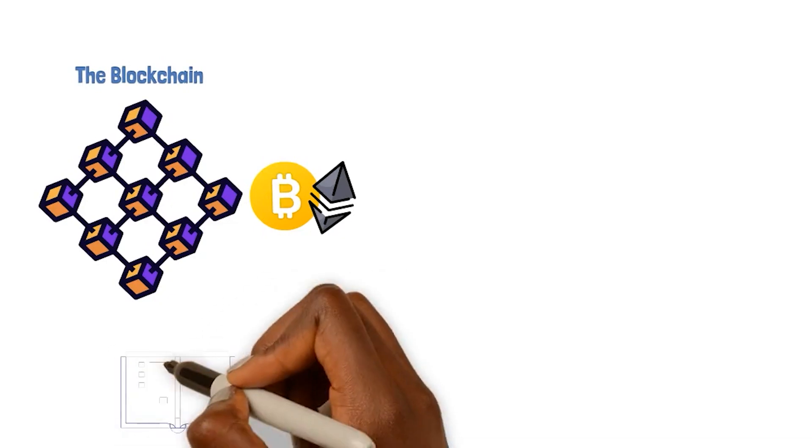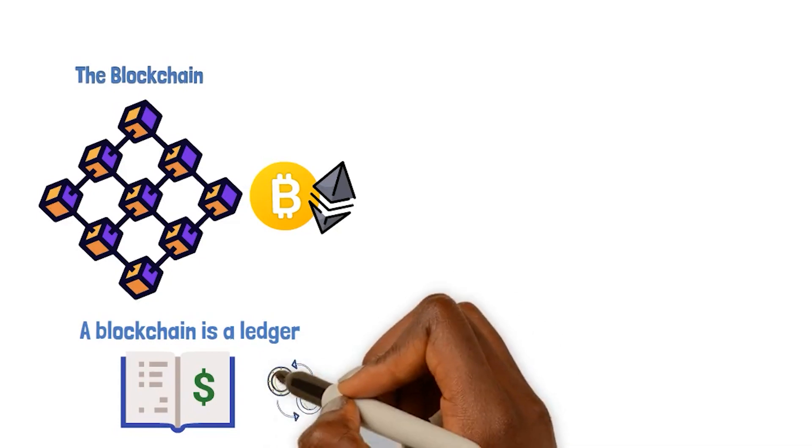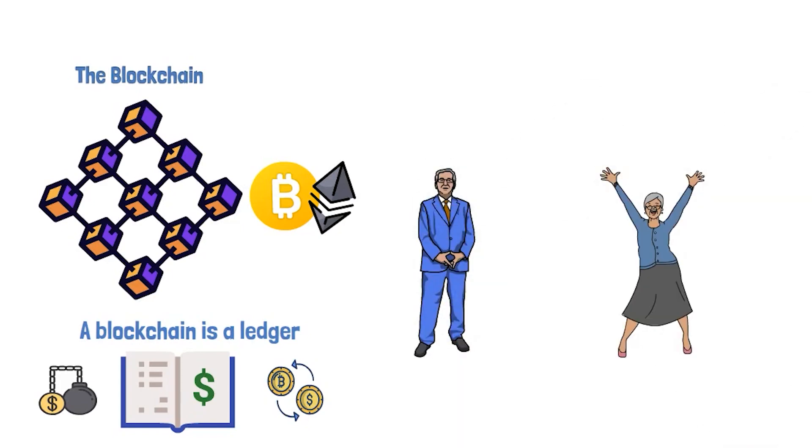A blockchain is essentially a ledger that keeps track of different types of information, including transactions and debts. Anybody can use it to enter or monitor any kind of transaction that they would like.